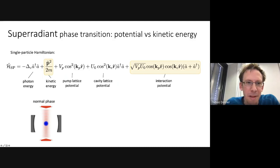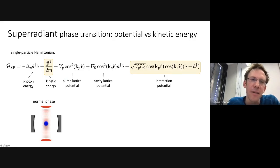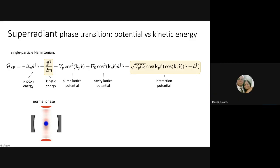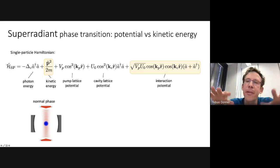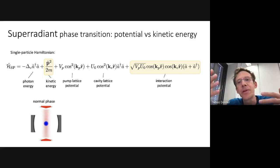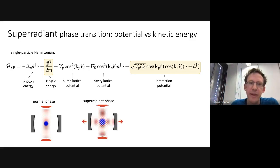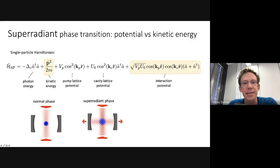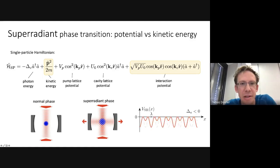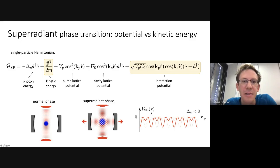This interaction term competes with kinetic energy: kinetic energy wants to flatten the wave function, while the interaction potential wants the atomic wave function to form a checkerboard — which costs kinetic energy. This competition gives rise to a phase transition between a normal phase (flat density, empty cavity) and a superradiant phase (modulated density, filled cavity mode). In the superradiant phase, the atoms feel a potential with lambda-spaced minima along the cavity axis, into which they are drawn.